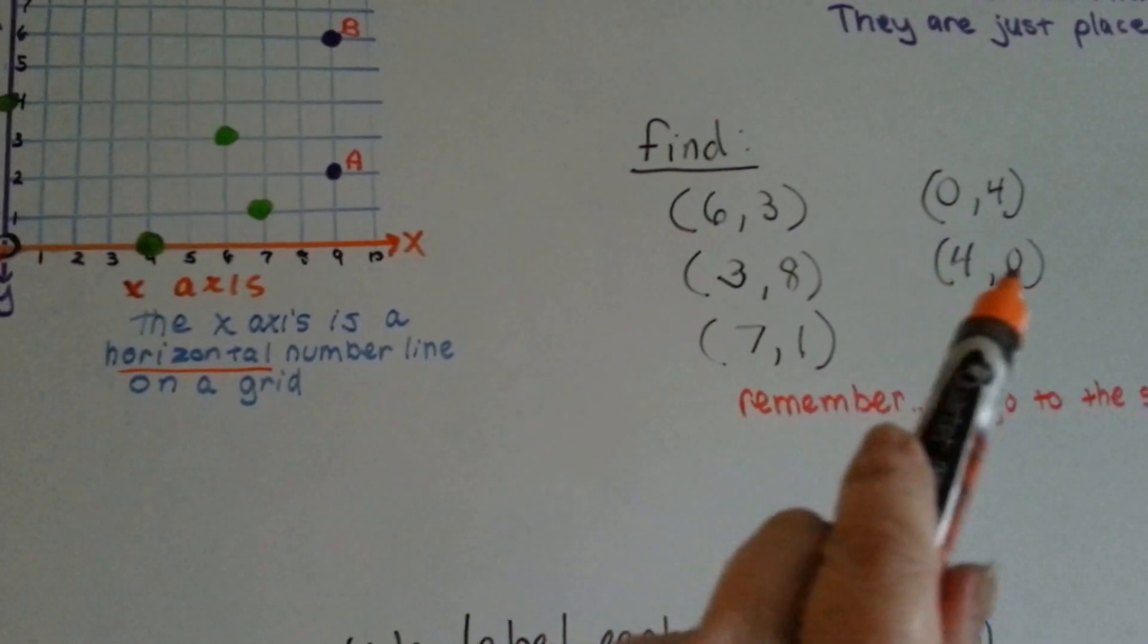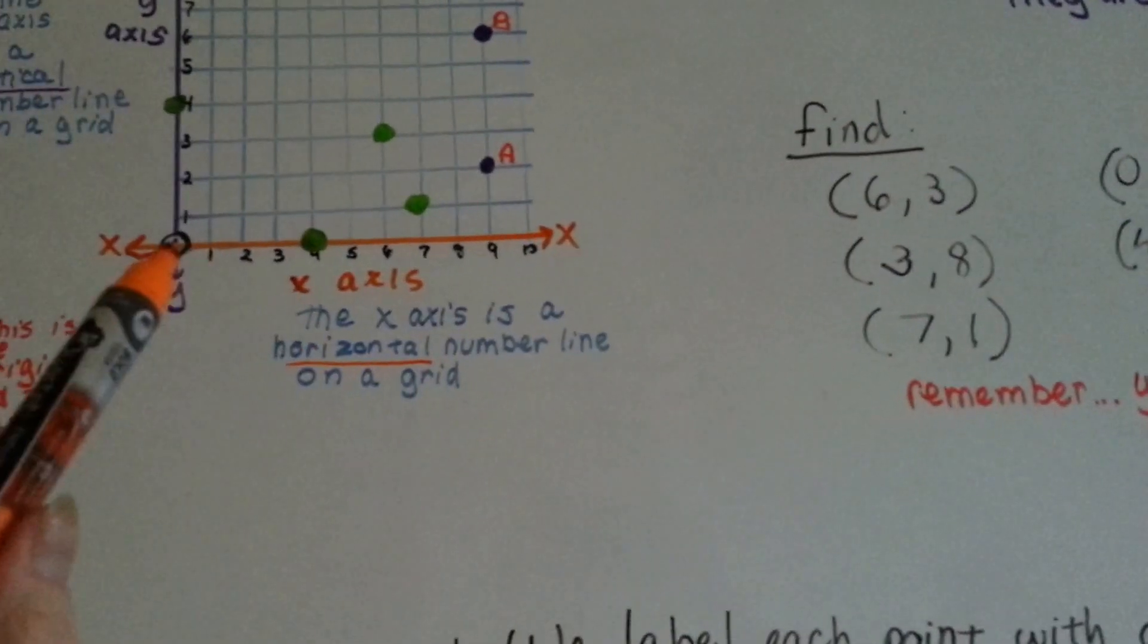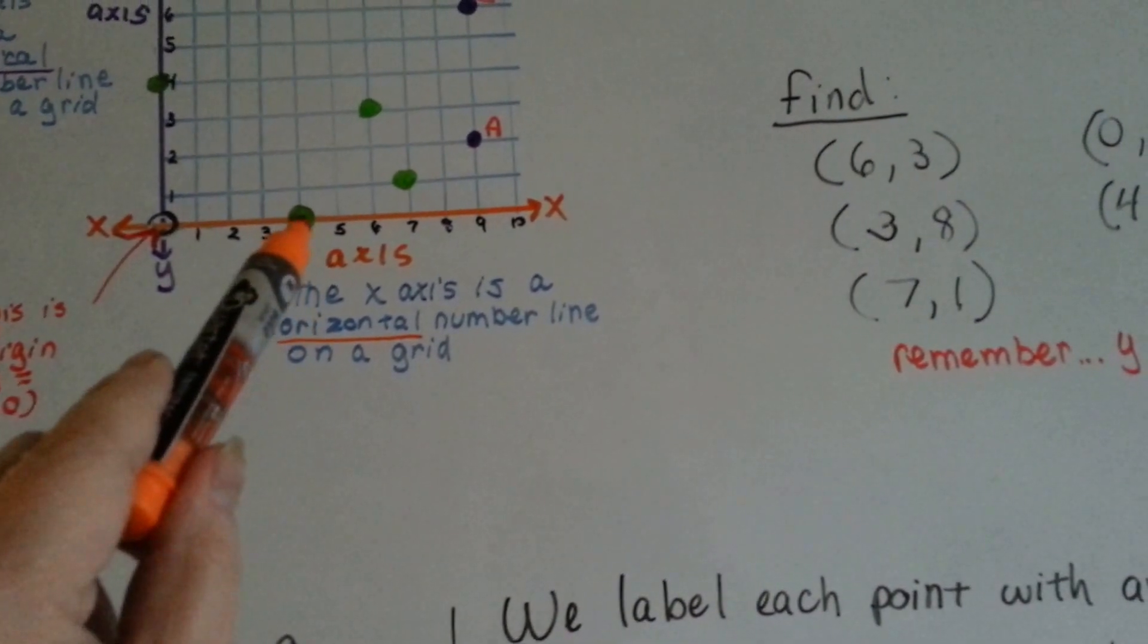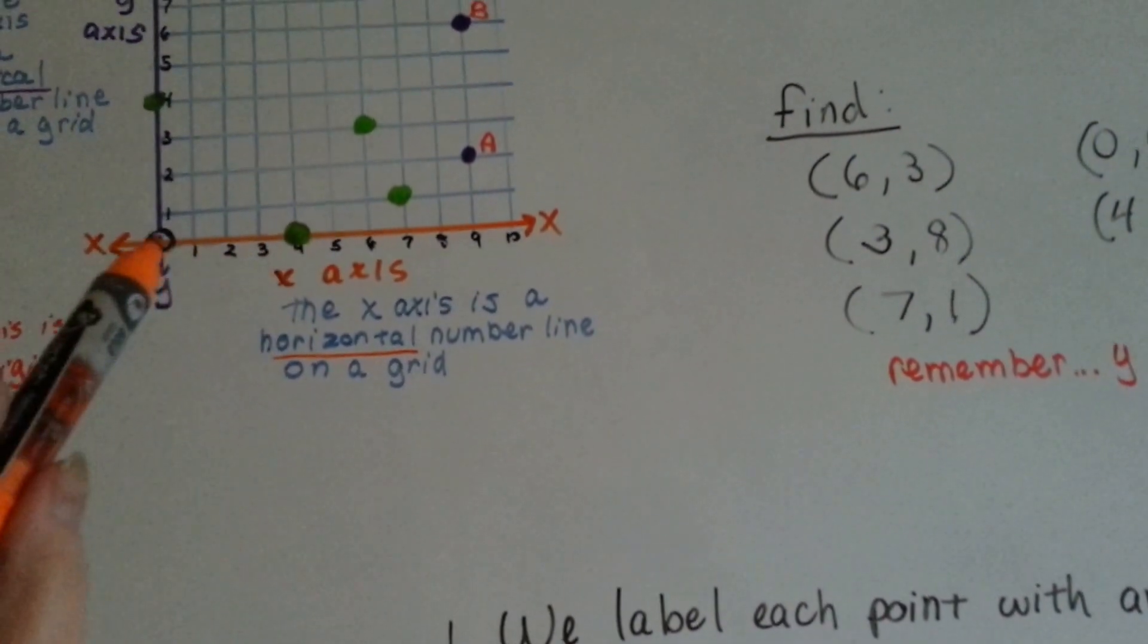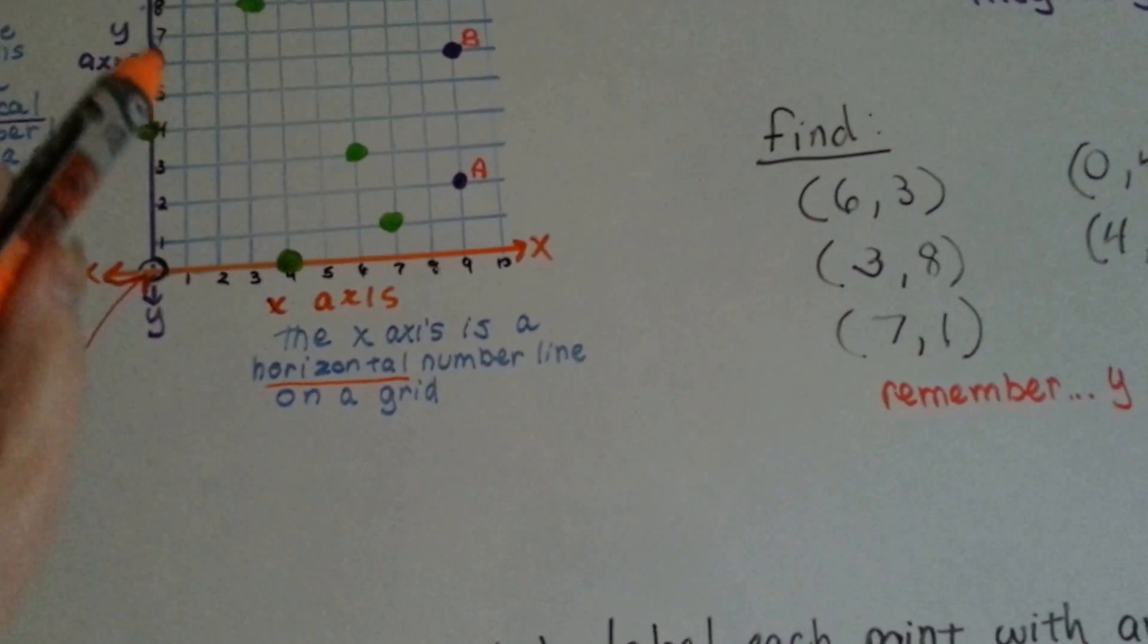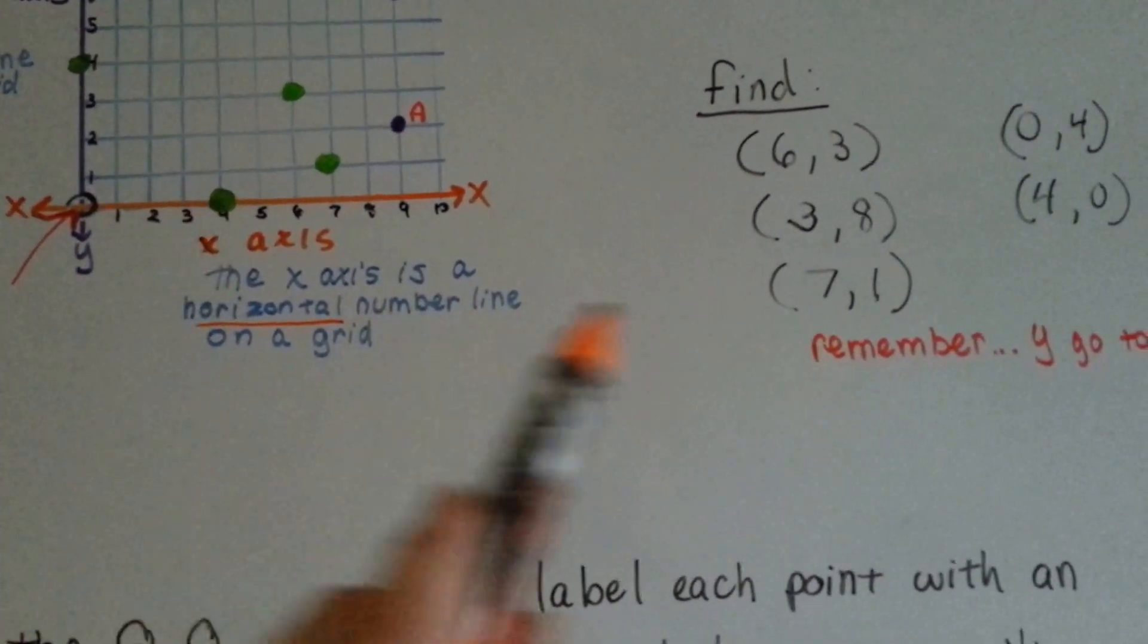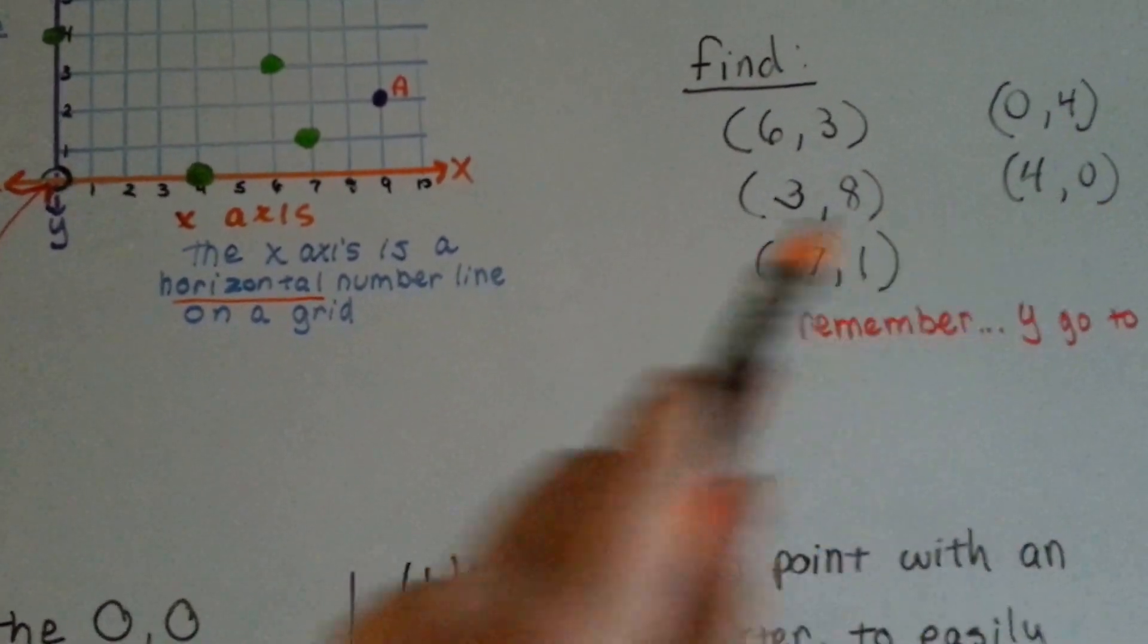If we wanted to find the opposite, 4, 0, then we would go to 4 on the x line and 0 in height. See how this is the height going 1, 2, 3, 4, 5, 6, 7, it's going up. So we're at a 0 height, but we're at 4 on the x line. There's no y, it's at 0.